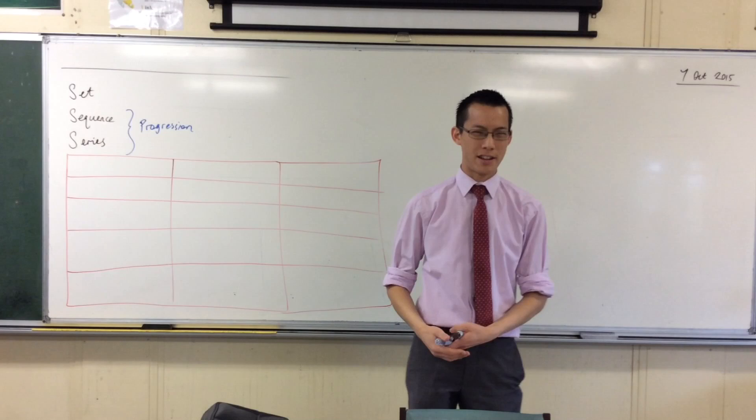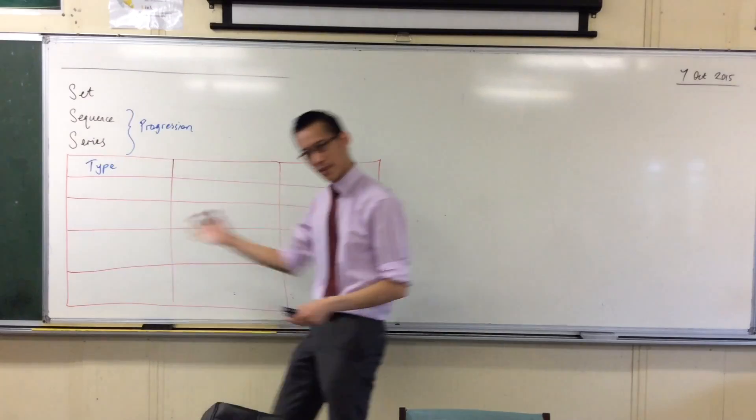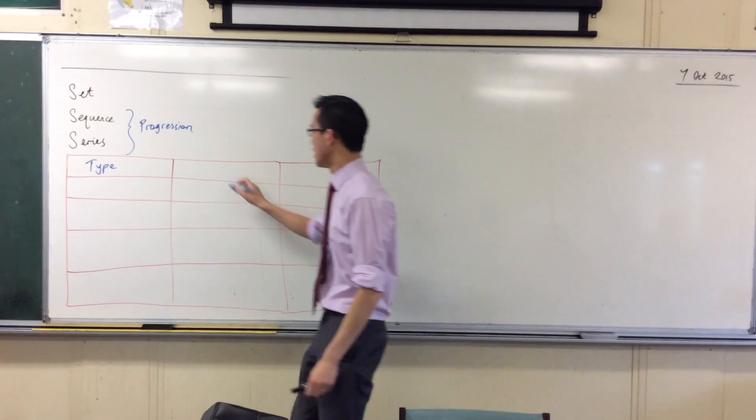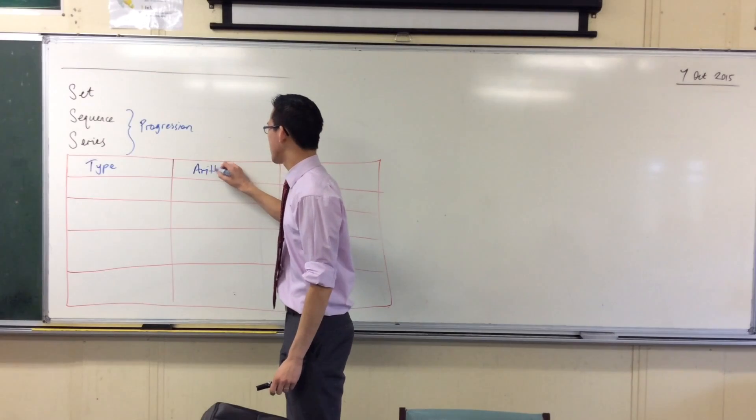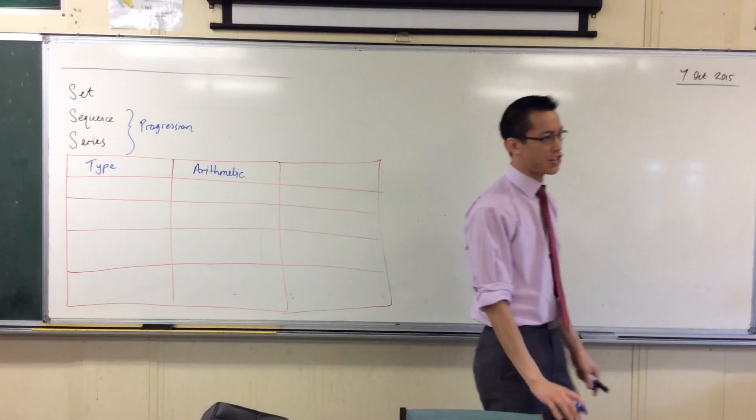So the first kind of type, so we're going to fill in this table as we go. The first type of series is what we call an arithmetic sequence, or series, an arithmetic progression.